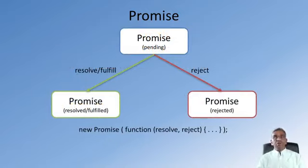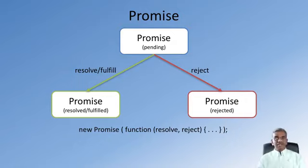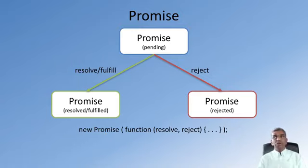A pending promise might either resolve — what we call the fulfilling of the promise — when the value is correctly obtained. When the promise is resolved, you will have a piece of code that handles that fact. If the promise is rejected, you should also handle that situation, the rejection of the promise, correspondingly within your code. That is the reason whenever you create a promise, you always supply the resolve and the reject options, and the resolve option is typically handled by the dot-then option for your promise.